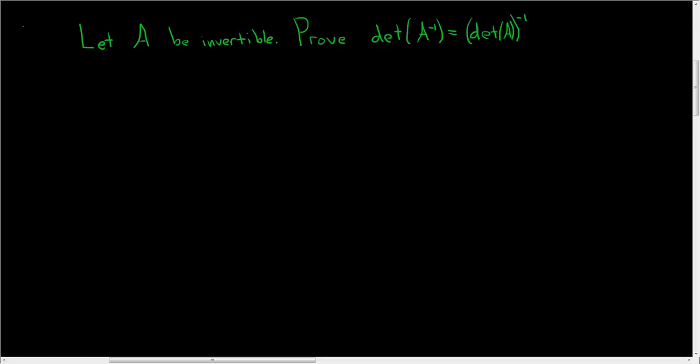Suppose A is an invertible matrix. We want to prove the following equation involving determinants, so this should be pretty easy proof.